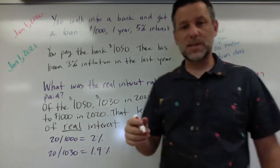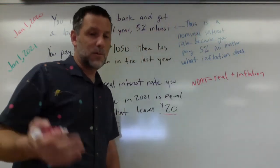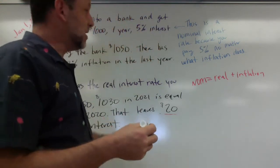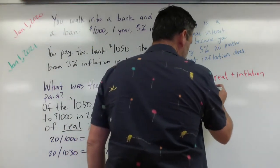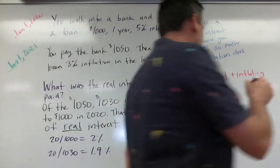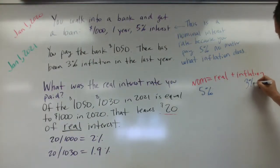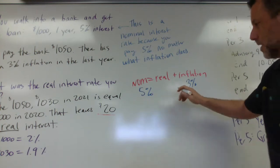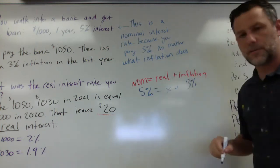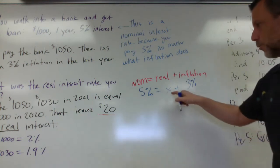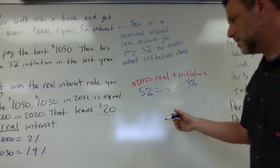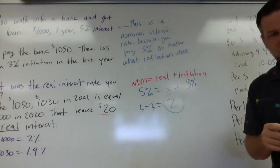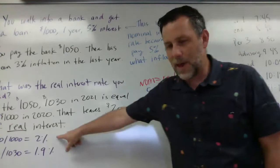So again, nominal equals real plus inflation. We can plug our numbers in there from this whole question here, and we could see how it works. So my nominal interest rate, we set up here that the original interest rate was 5%. My inflation rate, 3%. So I've got a nominal interest rate of 5%, an inflation rate of 3%. And then we could use this to just solve for X. And what we would find is that our real interest rate is again, 2%. So we get 5 minus 3 gives us 2 as our answer.